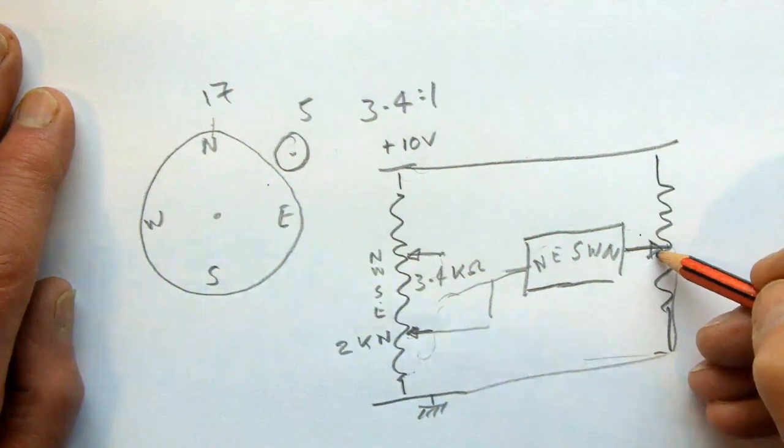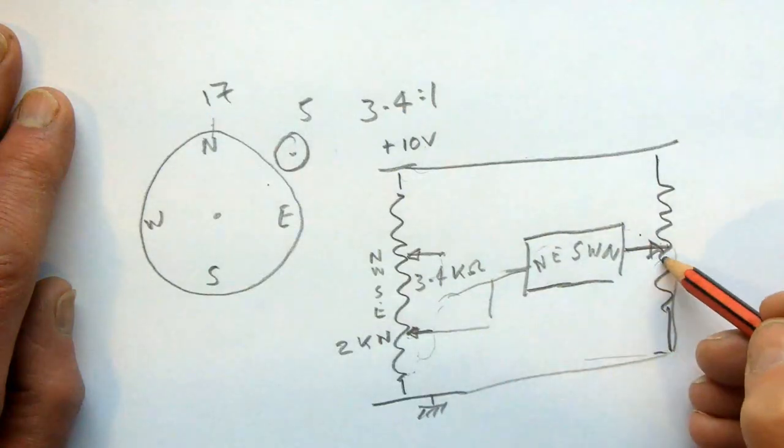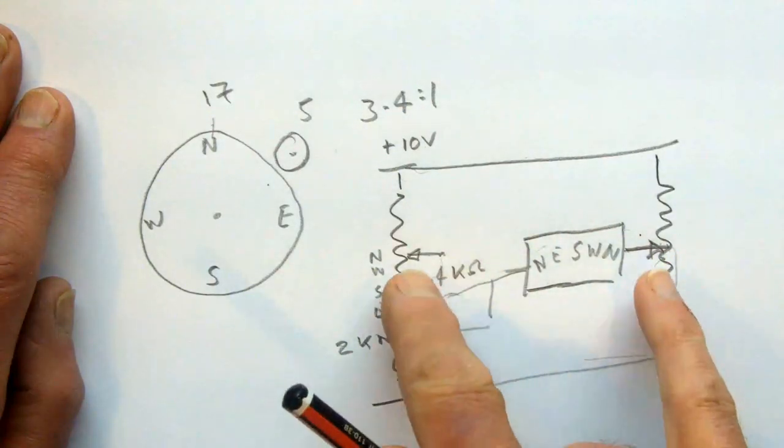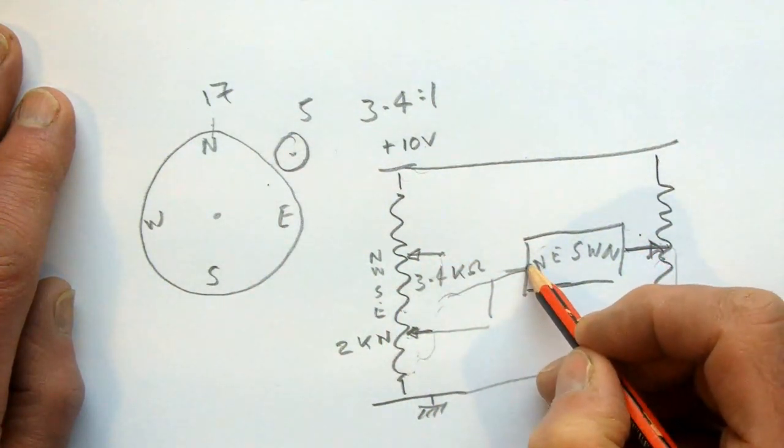And that'll set the zero. So obviously if I've got this set at 2 volts and that's at 2 volts, then there's no potential difference between those two positions, so the meter will read zero volts.